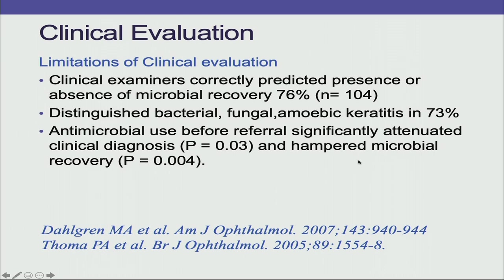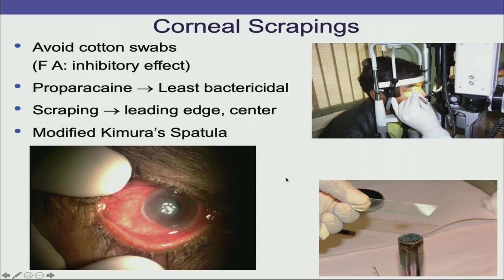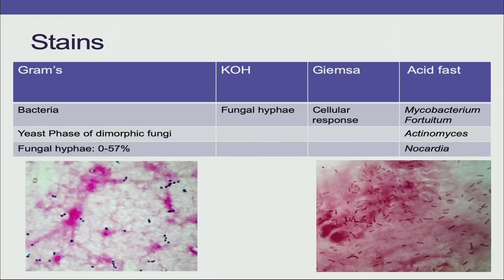If the ulcer is not responding to treatment, it is always best to do microbiology. Corneal scrapes are the mainstay for any case of microbial keratitis. Proparacaine should be used as it is least bactericidal, and scraping should be done from the leading edge as well as the center of the ulcer. A 15-degree blade or modified Kimura spatula is recommended. The most important stain is KOH, which immediately tells you whether to start antifungal therapy. Gram stain is also done, and in recalcitrant cases, acid-fast stain is performed for mycobacteria, actinomyces, and nocardia.